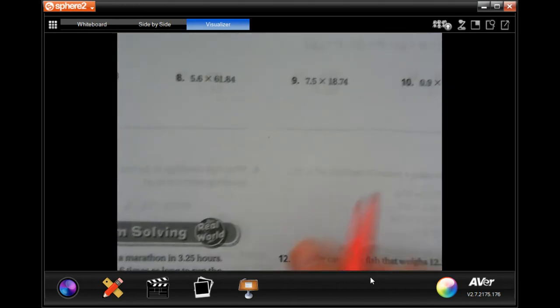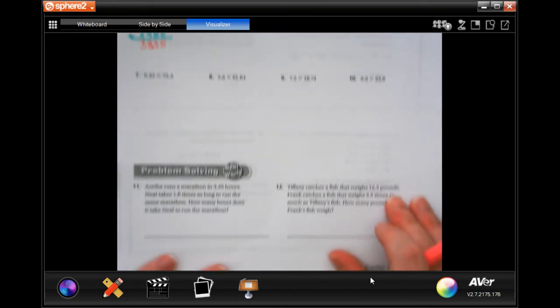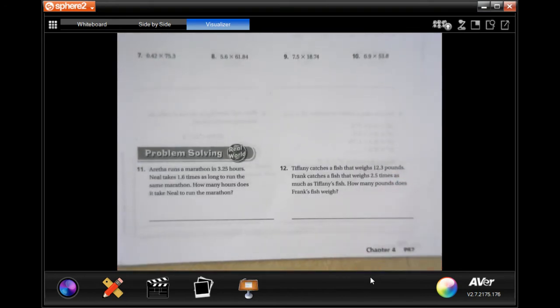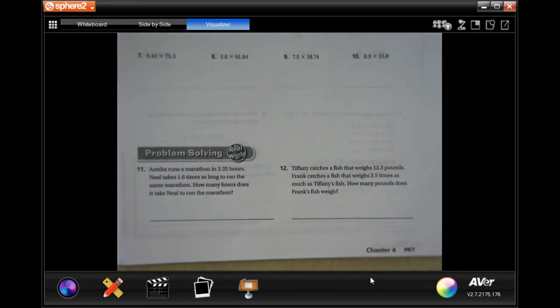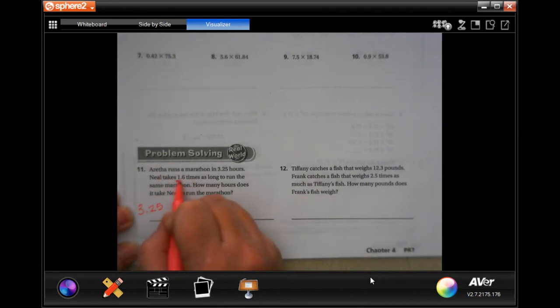You guys are going to do five through ten. I'm going to back us up so we can see the bigger picture. Aretha runs a marathon in 3.25 hours. Neil takes 1.6 times as long to run the same marathon. How many hours does Neil take? So we have 3.25 and we're going to multiply that, it told you, 1.6 times.